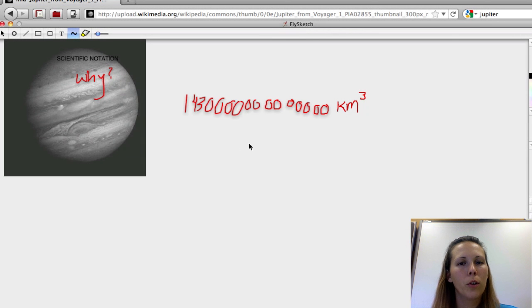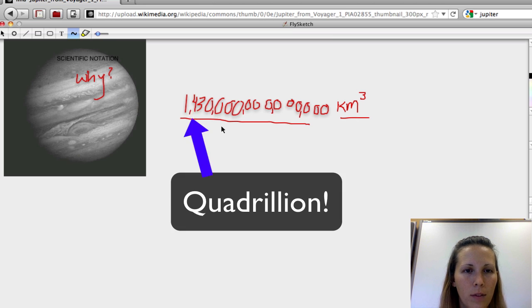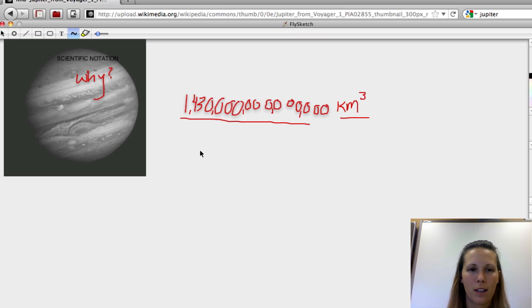For example, Jupiter's volume is this many numbers, kilometers cubed. Cubic kilometers. 1,000, million, billion, trillion, I don't even know what that is. It's really big. You can fit something like 1,300 earths inside Jupiter. So that's the volume. So to deal with a really big number like this, we put it into scientific notation, really because scientists are lazy.